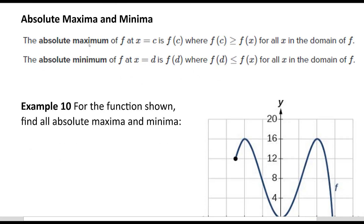Now for absolute maximum and minimum — these are not just on an interval, they apply to the whole domain. F(c) is an absolute maximum if F(c) is greater than or equal to F(x) for all x in the domain. The absolute minimum is at x equals d where F(d) is less than or equal to F(x) for all x in the domain — so if it's forever the biggest or the lowest, that's an absolute extremum.